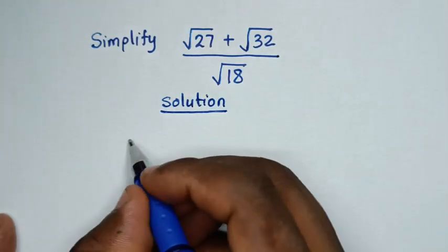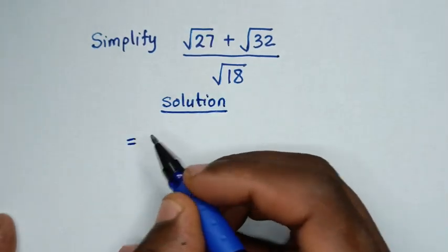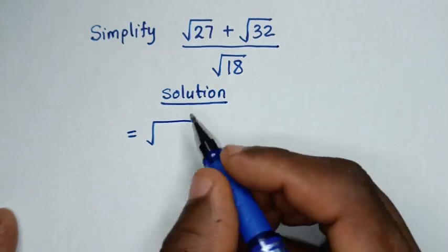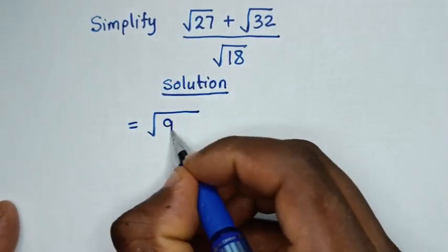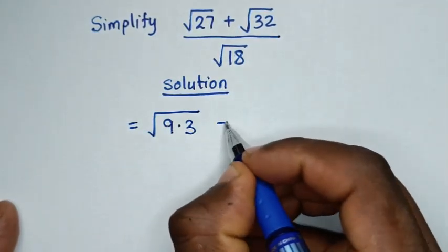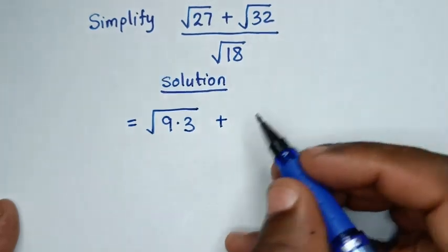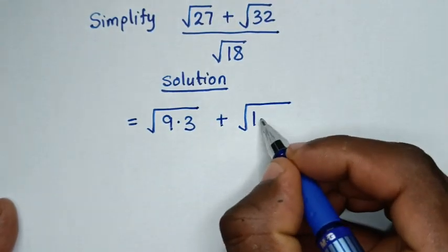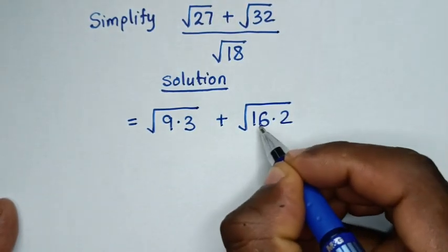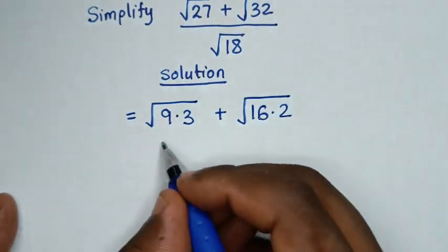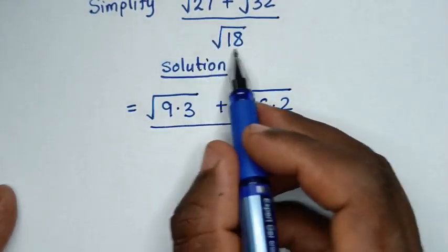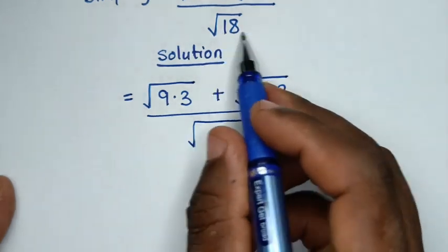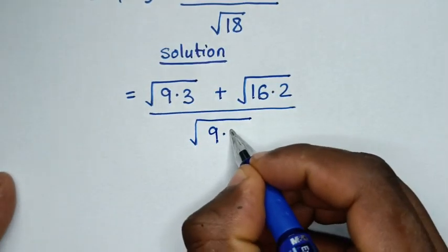From this problem, it will be equal to: square root of 27 is the same as square root of 9 times 3. Then plus square root of 32, which is the same as square root of 16 times 2. Then over square root of 18, which is the same as square root of 9 times 2.